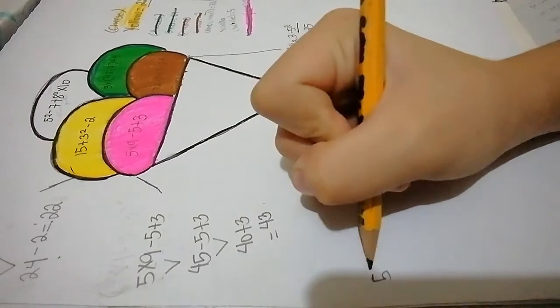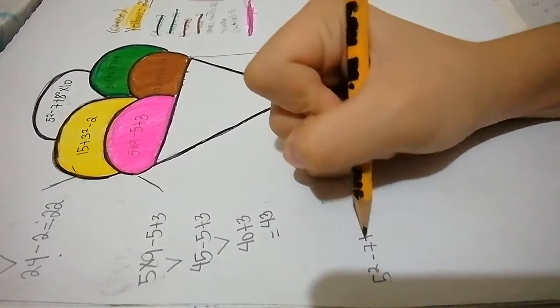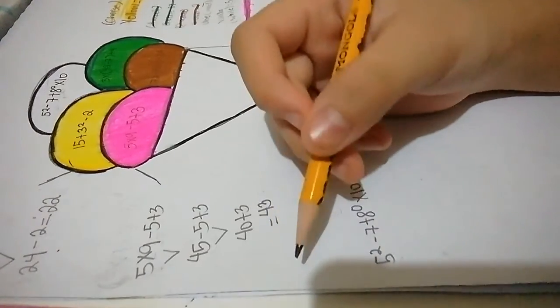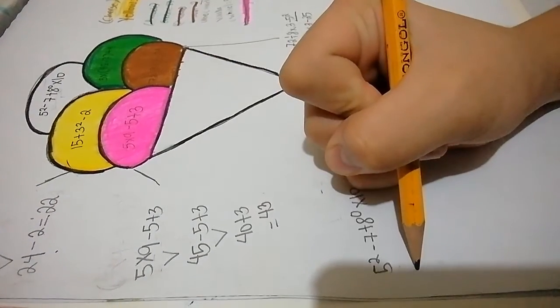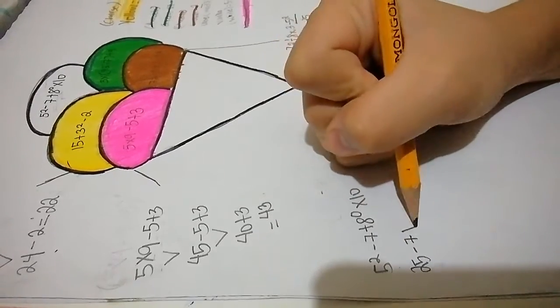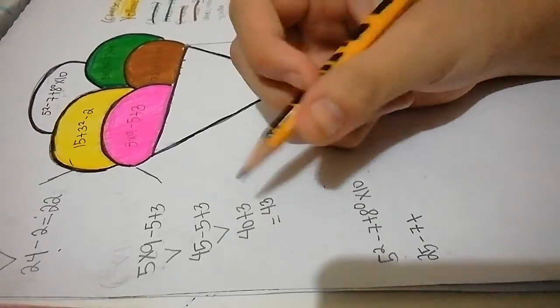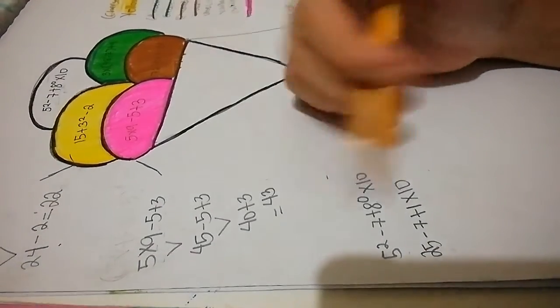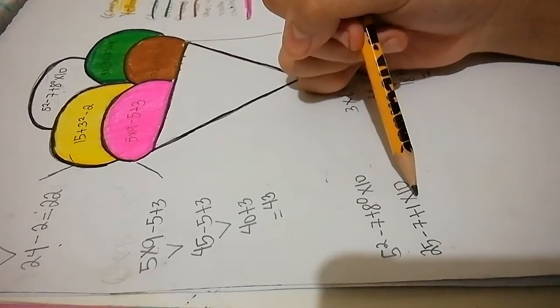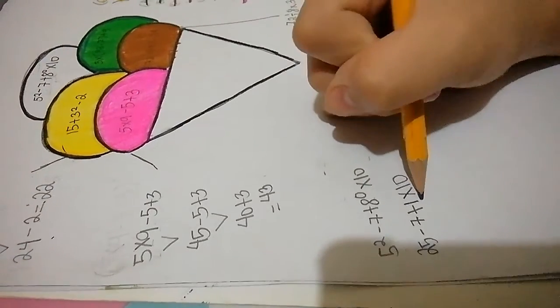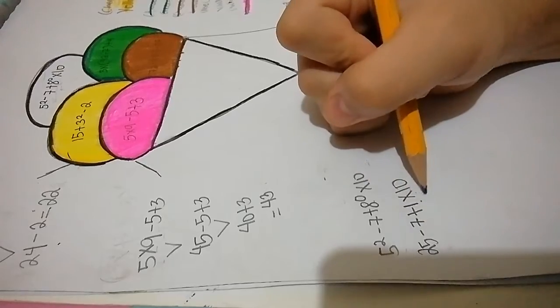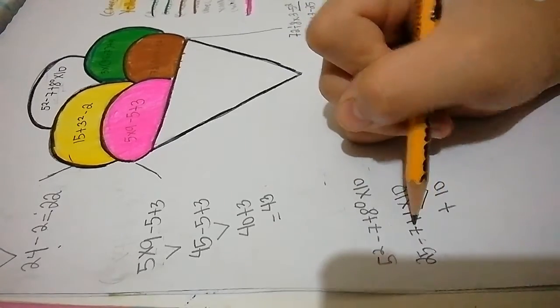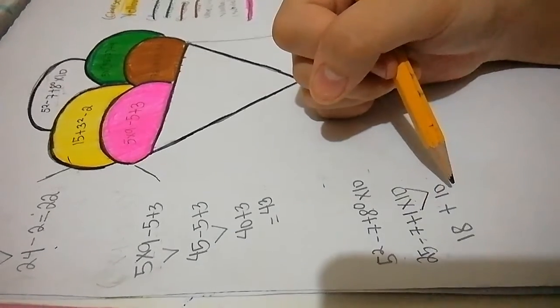5 to the second power minus 7 plus 8 to the 0 power times 10. We have exponentials: 5 times 5 is 25. 8 to the 0 power is 1. So we have 25 minus 7 plus 1 times 10. Following PEMDAS, we don't have division, so multiplication comes first. 1 times 10 is 10. Then 25 minus 7 is 18. 18 plus 10 is 28.